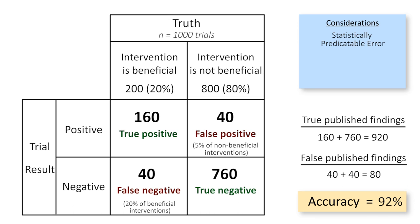But now let's consider the effect of publication bias. Negative trials are much more difficult to publish. If every positive trial is published, but only 10% of the negative trials are, which may even be a generous estimate, then the published literature ends up with 160 true positive trials, 40 false positive trials, 4 false negative trials, and 76 true negative trials. This results in 84% of published trials being true. Publication bias worsens the accuracy of published trials because trials showing benefit are both more likely to be published and more likely to be wrong than trials showing no benefit.